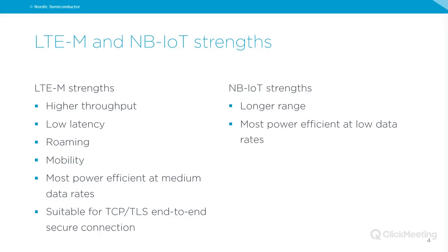LTE-M strengths include high throughput, lower latency, roaming across countries with the same SIM card, and mobility. It is most power-efficient at medium data rates — the more data you send, the more power-efficient LTE-M becomes compared to NB-IoT. It's also suitable for end-to-end secure connections using TCP and TLS over IP packets. NB-IoT's strengths are longer range and greater power efficiency at lower data rates.